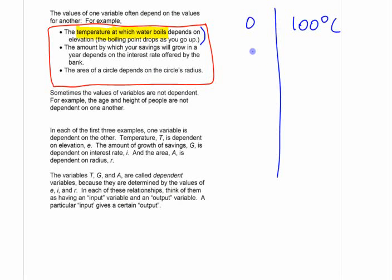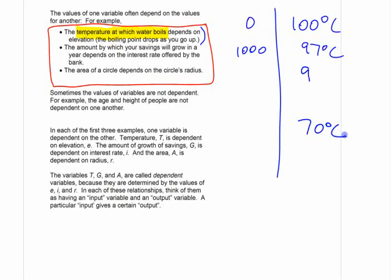So if you go up a kilometer — a city like Calgary is about a kilometer above sea level, so a thousand meters — it'll boil at about 97 degrees. If you go higher than that, like in Denver, Colorado, the mile-high city, it boils at even lower. If you went to the top of Mount Everest, which is 8,000 or 9,000 meters, I think it boils at about 70 degrees — in theory, that's what it should be.